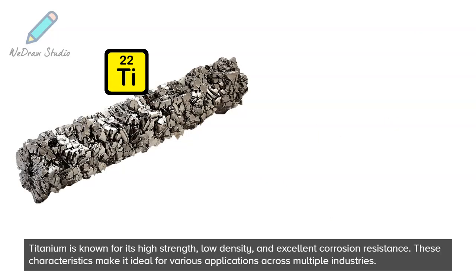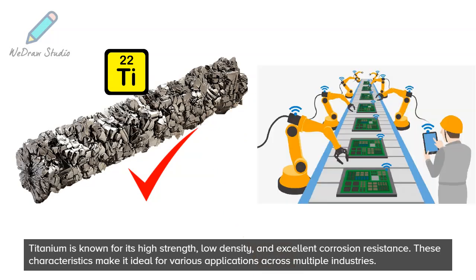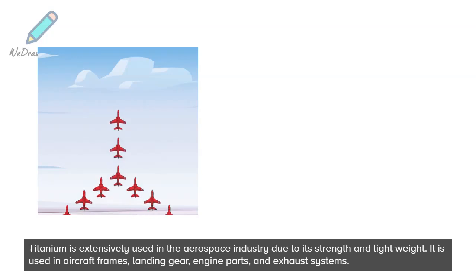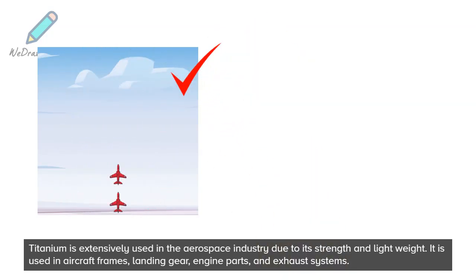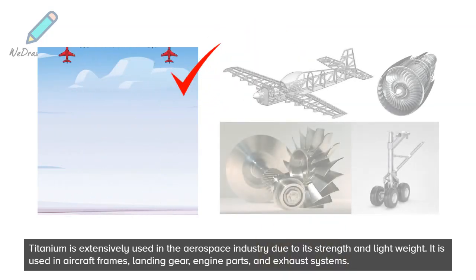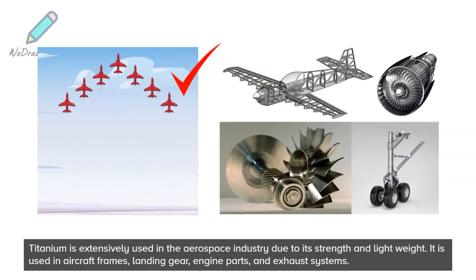Titanium is known for its high strength, low density, and excellent corrosion resistance. These characteristics make it ideal for various applications across multiple industries. Titanium is extensively used in the aerospace industry due to its strength and light weight. It is used in aircraft frames, landing gear, engine parts, and exhaust systems.